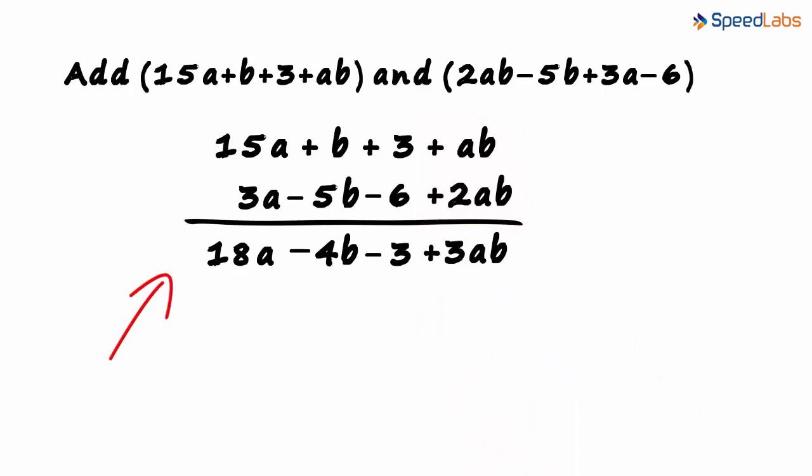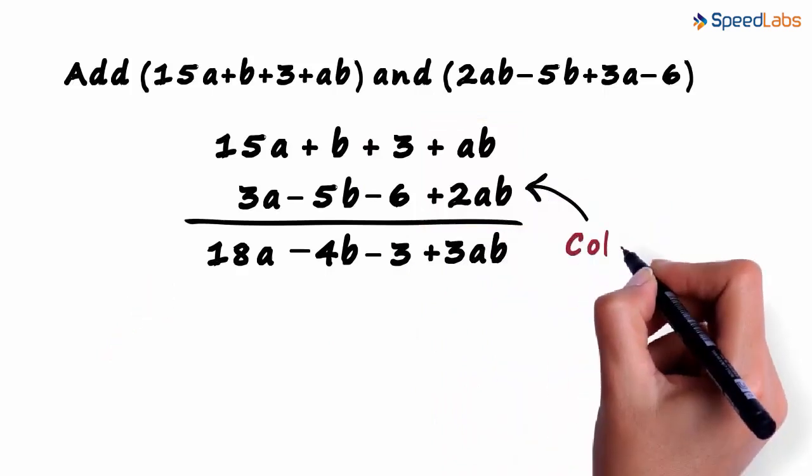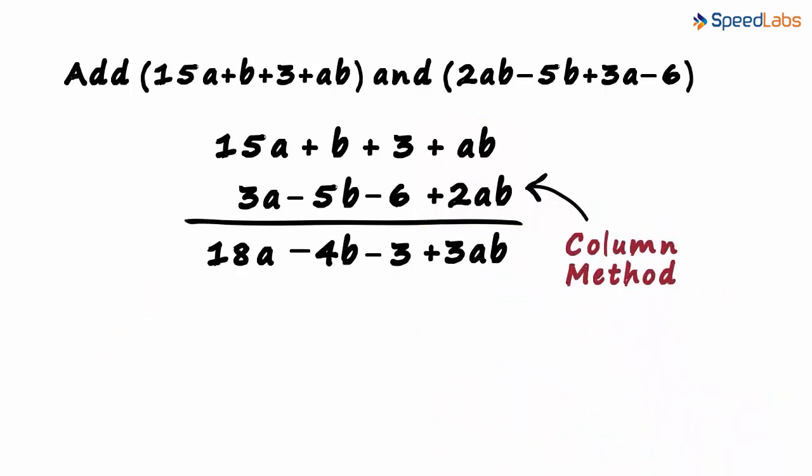This method we just saw is called the column method. We form groups, yes, but we write it in columns. One advantage of the method is that it looks cleaner and more systematic. We are more used to solving addition and subtraction problems when numbers are written one below the other.